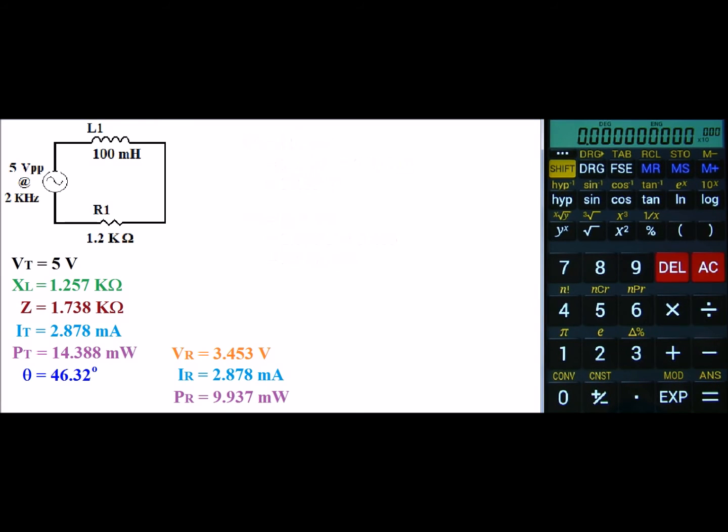Next let's go ahead and look at the inductor. Again, this is a series circuit, so my current IL is going to be equal to IT, which is 2.878 milliamps.